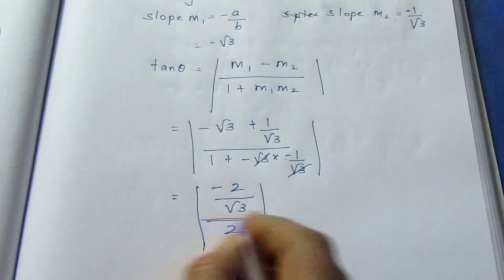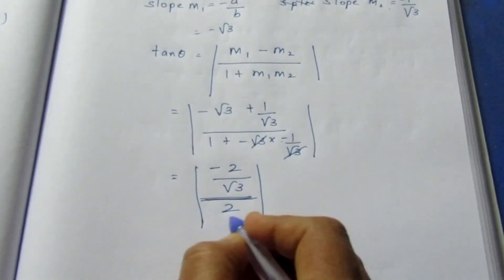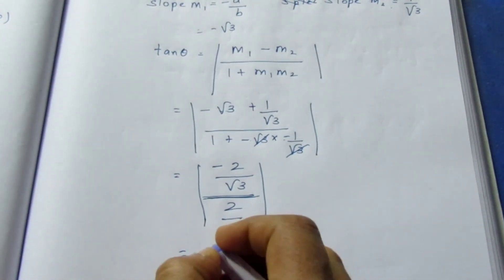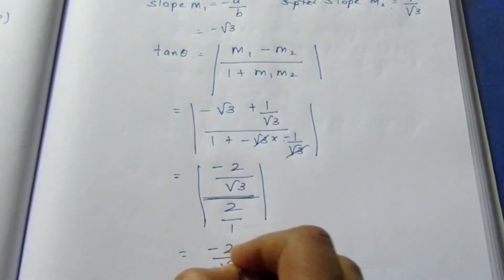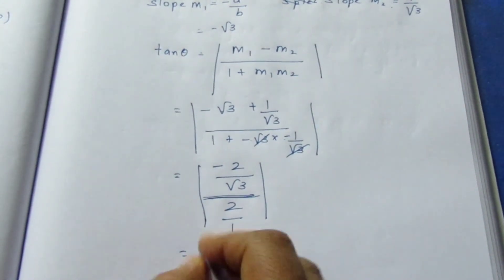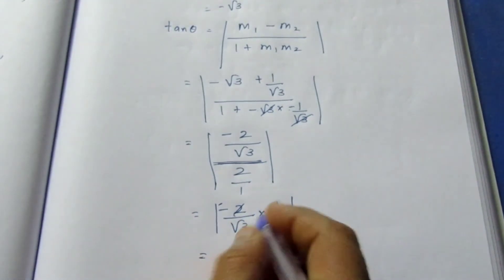If there is nothing on the denominator, this is the major denominator. If nothing on the denominator, we can write this to be 1. It goes as a reciprocal and becomes -2/√3 × 1/2. This gets cancelled. We have -1/√3.